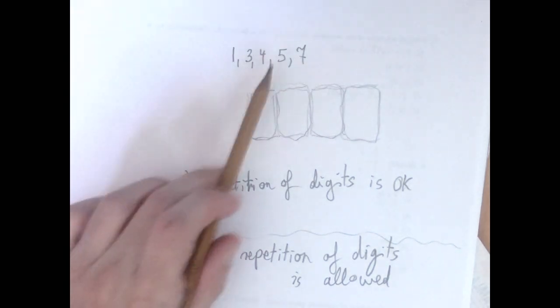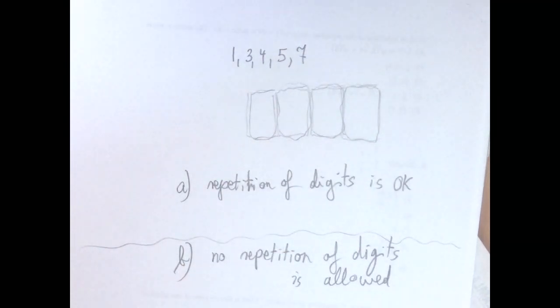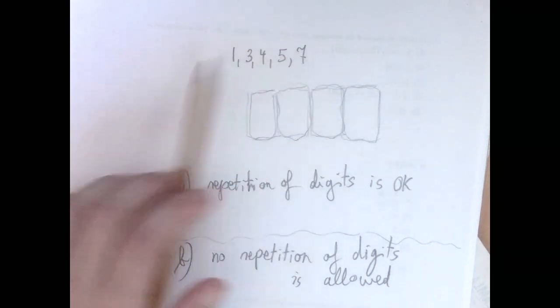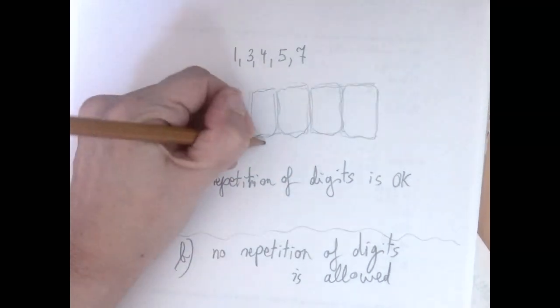So suppose we have these five different digits, and we want to create a four-digit number. Let's go to the first decimal place here. How many choices do we have? How many options do we have? We have five digits to choose from. Each five is allowed, so we have five choices here.